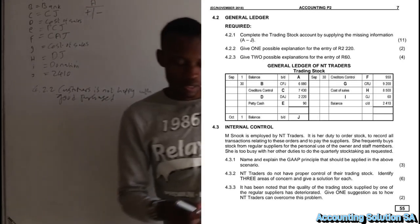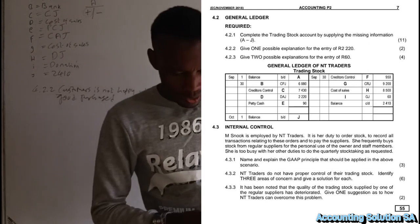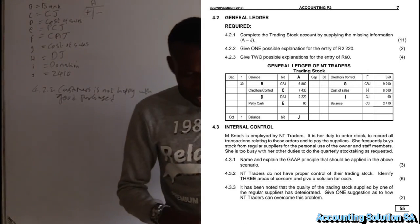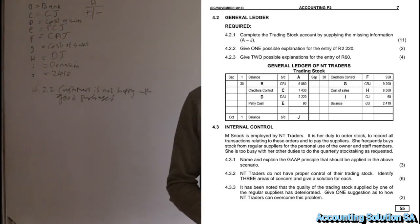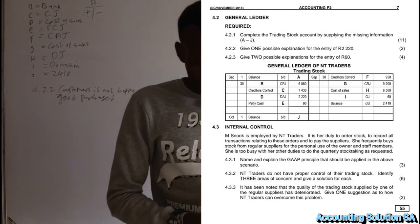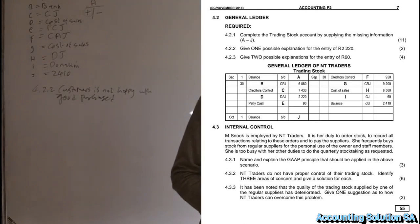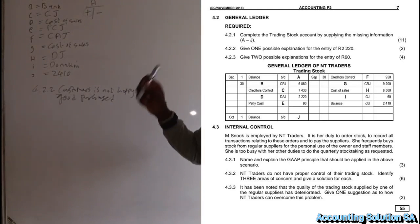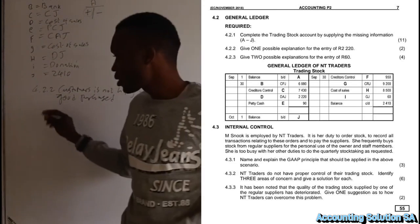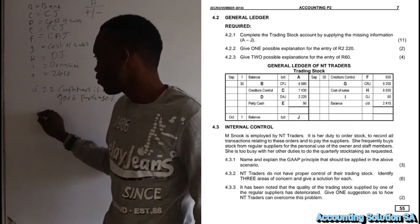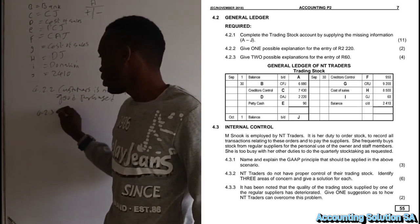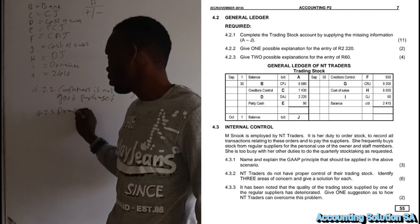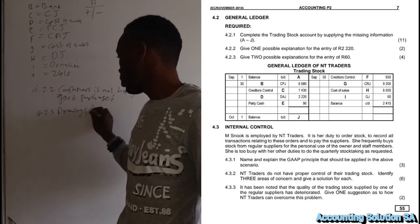Question 4.2.3 asks for two possible explanations for the entry of 60,000. As already discussed, it can be drawings — the owner withdrew stock for personal use — or it can be a donation.